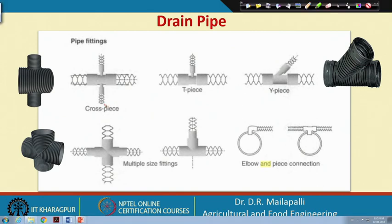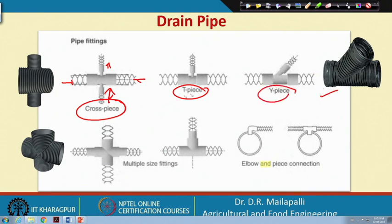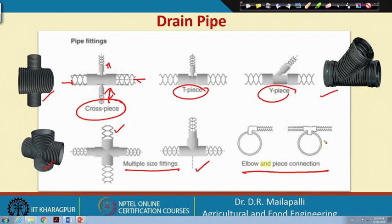Pipe fittings include cross-piece fittings with reducers for composite pipe connections, T-pieces, and Y-pieces — all commercially available in multiple sizes. Multiple size fittings allow connecting different laterals to the collector. The Helbo piece connection is also available: in a composite arrangement, the collector runs along the center and the laterals connect to it, allowing water to enter the collector.